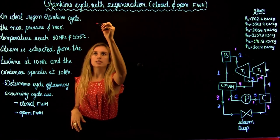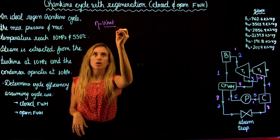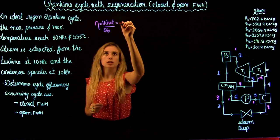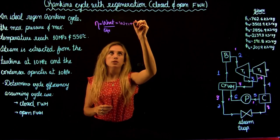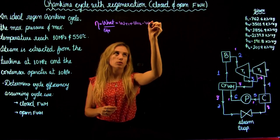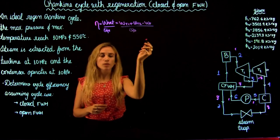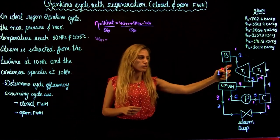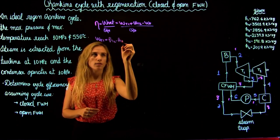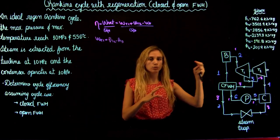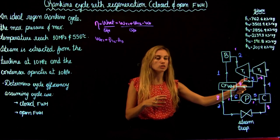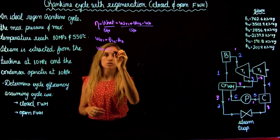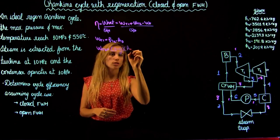Now let's write the equation for the cycle efficiency, which is equal to the net work over the heat input. The net work is the work output produced minus the work input — so it's the work done by the high pressure turbine plus the low pressure turbine, minus the work of the pump, over the heat input in the boiler. The work of the high pressure turbine is equal to H2 minus H3. At the low pressure turbine, a fraction of the flow enters, so it's going to be (1 minus Y) times (H3 minus H4).